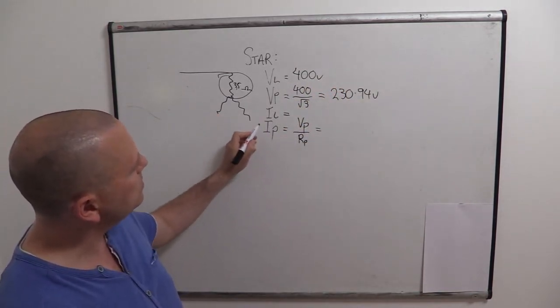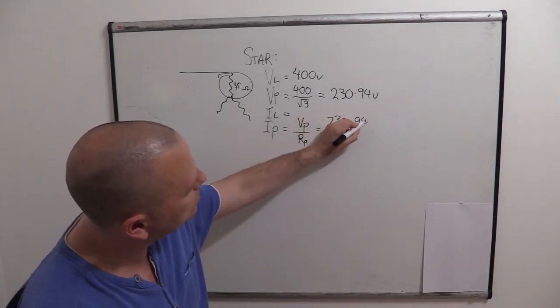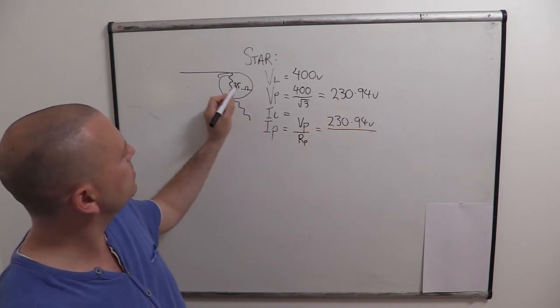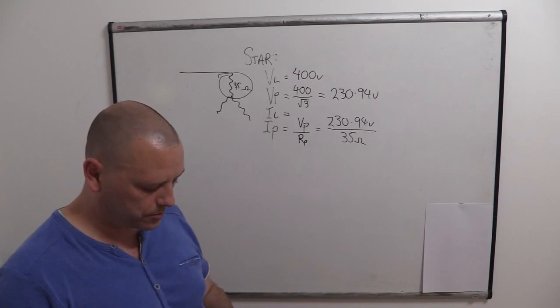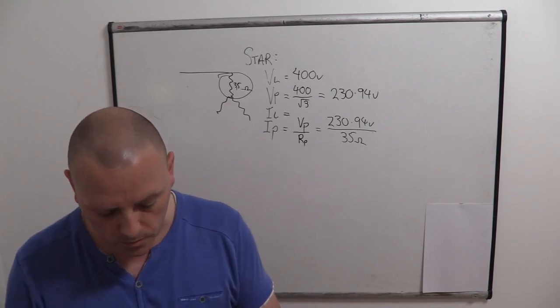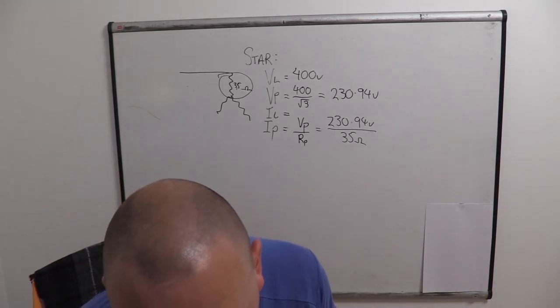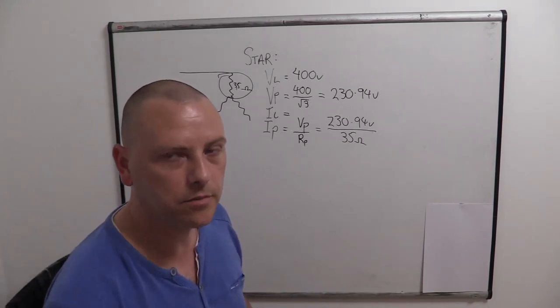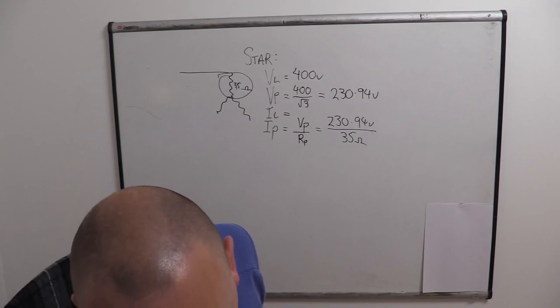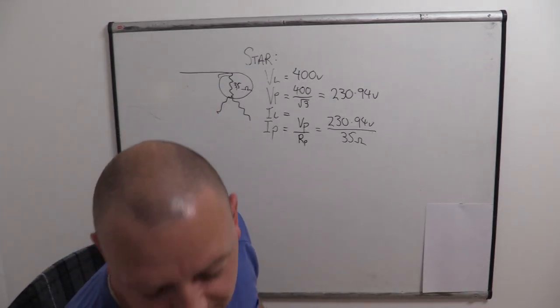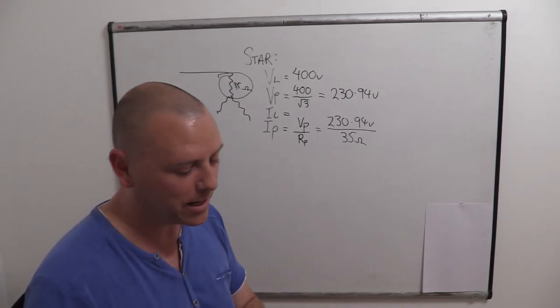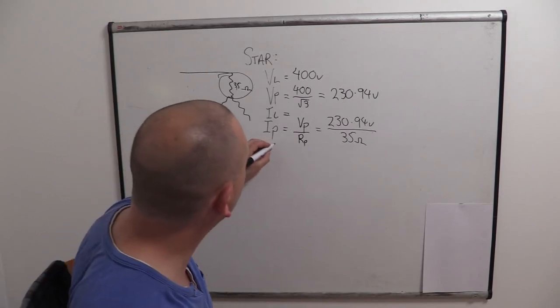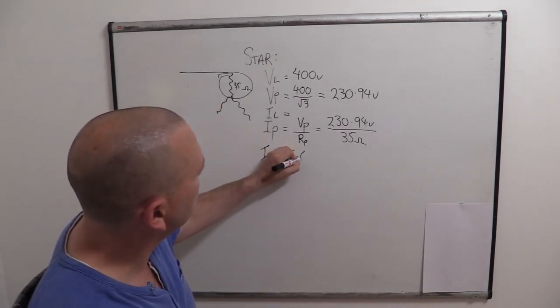And now we can complete this, 230.94 divided by our phase resistance, which is 35 ohms. And that's going to give us a phase current of 6.6 amps. Let me check my rounding. 6.598, two significant digits, 6.6. Yeah, I need to look more than once now. I really am getting bad eyes. 6.6 amps.